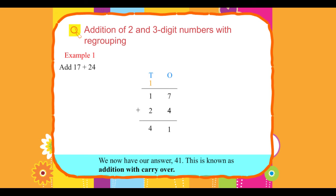This is known as addition with carryover. 17 plus 24 equals 41.